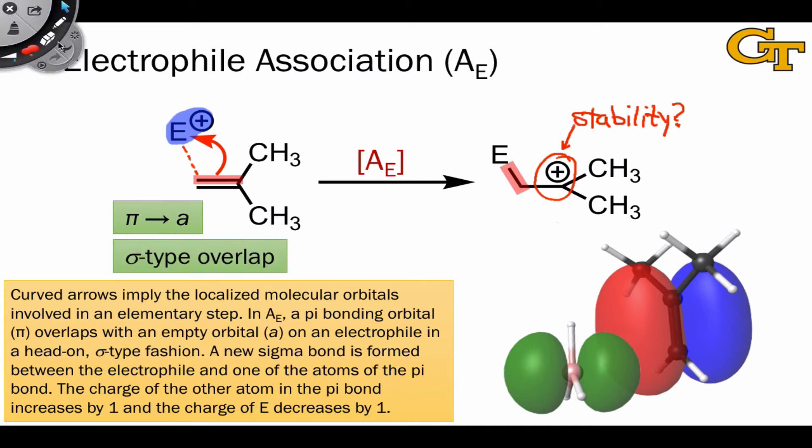This is considered sigma-type orbital overlap, because if we focus on the lobe of the p orbital that's involved in overlap with the empty atomic orbital directly, we see that the two orbitals are overlapping coaxially. Notice also that a new sigma bond is formed between the two molecules involved in this step.